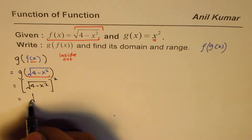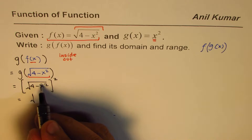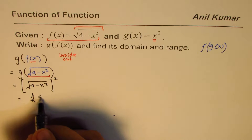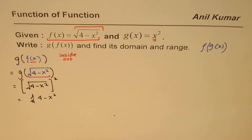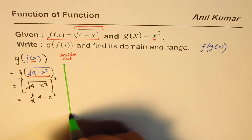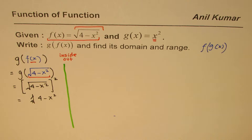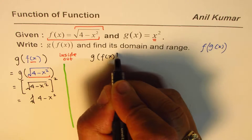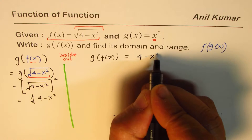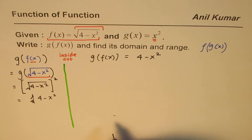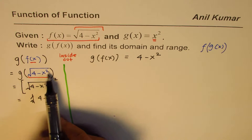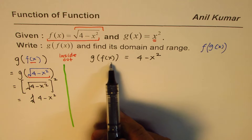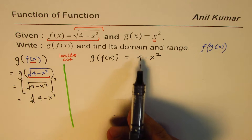That simplifies: square root is like to the power of half, and square is power of 2, so the square root vanishes and we get 4 minus x square. So our function of function is 4 minus x square. Let me write down the function of function very clearly: g of f of x equals 4 minus x square. Now remember the inside function when we started with was square root of 4 minus x square, and the function we get now is g of f of x which is 4 minus x square.